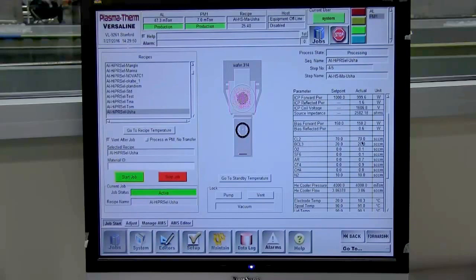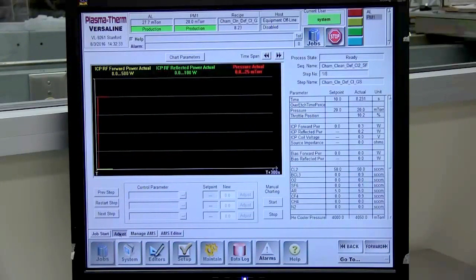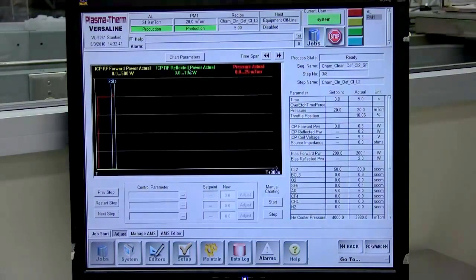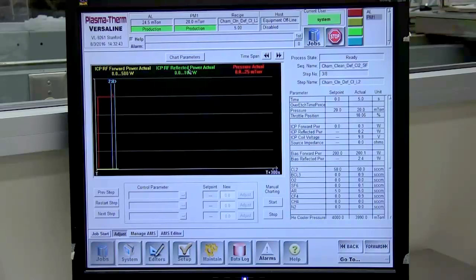Click the Job / Adjust button to monitor your process. You have a choice of monitoring three parameters and a real-time plot. Typically, ICP Forward, ICP Reflected, and Pressure are plotted. Monitor the process as it progresses.